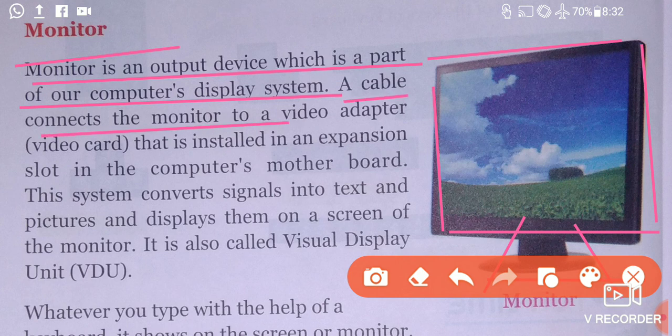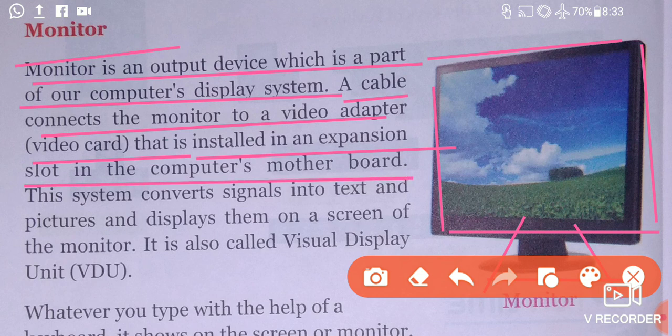A cable connects the monitor to a video adapter, also called a video card. This is installed in an expansion slot in the computer's motherboard. So the motherboard is connected by a cable to the video adapter or video card, which is installed in the expansion slot of the motherboard.